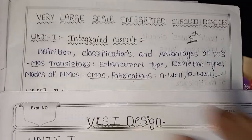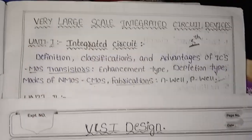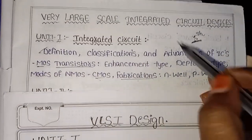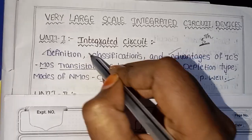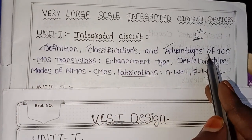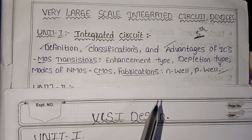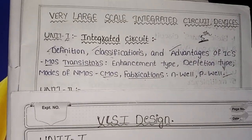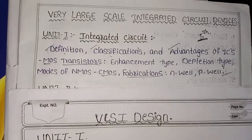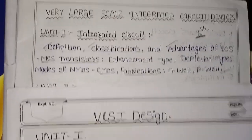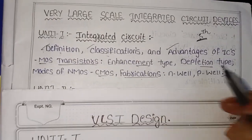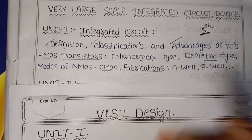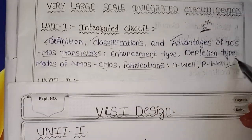Let's talk about the 5-mark questions for the first unit. The most important 5-mark topic is the MOS Transistor. In the MOS Transistor, there are two types: Enhancement Type and Depletion Type. These are the definitions you need to know — MOS Transistor definition, Enhancement Type definition, and Depletion Type definition.